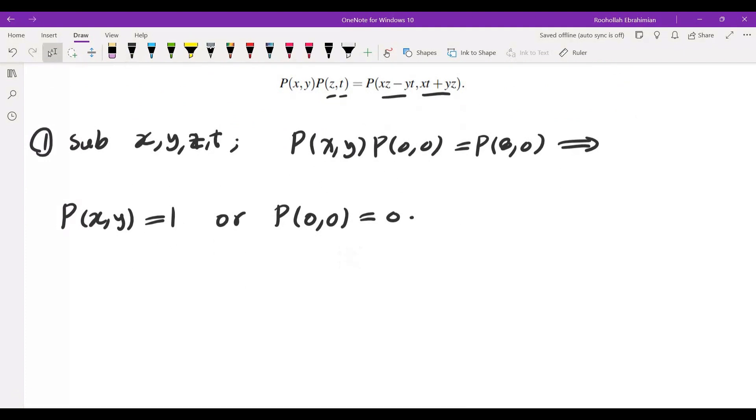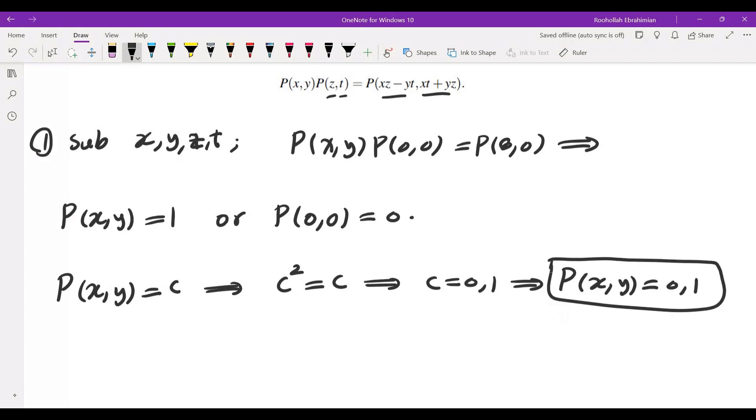Either P of X comma Y is equal to 1 or P of 0 comma 0 is equal to 0. So that was the motivation for me to see what are all the constant solutions to this equality. So let's say P of X comma Y is a constant. So that means C squared is equal to C which means C is either 0 or 1. So right away we know that all of the constant functions of the forms 0 and 1 are solutions to the polynomial identity.